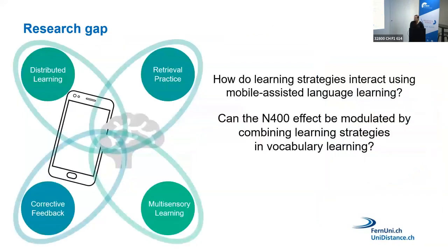We use not only behavioral but also neurophysiological measures to identify how learning strategies interact when using mobile assisted language learning tools. We want to use the N400 effect as a robust measure of associative learning and investigate whether modulation is reflected by the N400 in a gradual manner — to identify which learning strategy or combination works best for designing mobile phone applications.